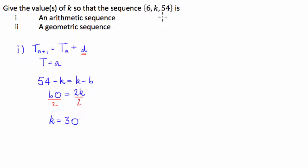Great, because we can see that the difference between 6 and 30 is 24, and 30 and 54 is 24 as well. So you can see that makes an arithmetic sequence.